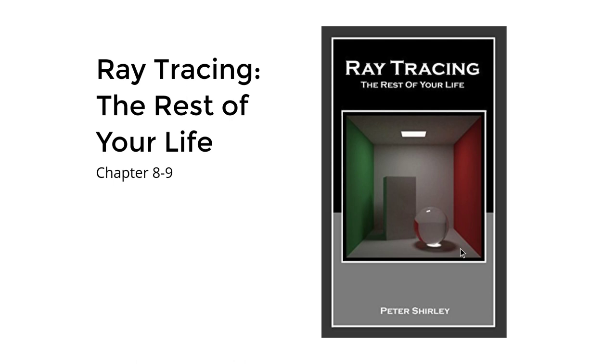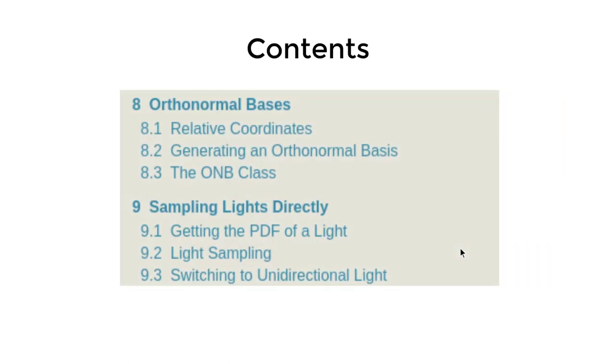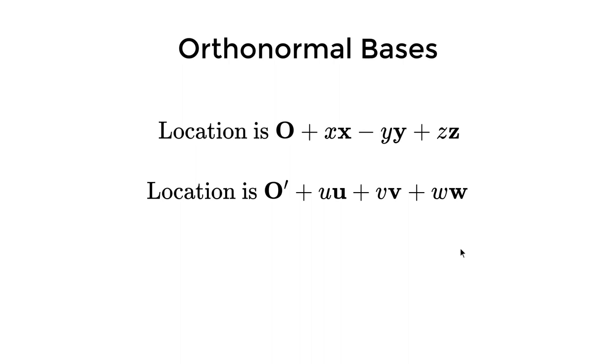The topic today is first orthonormal basis and then sampling light directly. We will finally apply the importance sampling technique we developed. But before we talk about important stuff, let's talk a little bit about orthonormal basis. Orthonormal basis, or in short ONB, is a collection of three mutually orthogonal unit vectors. So far we only use one orthonormal basis, the xyz axis, but we can have a lot more than that.